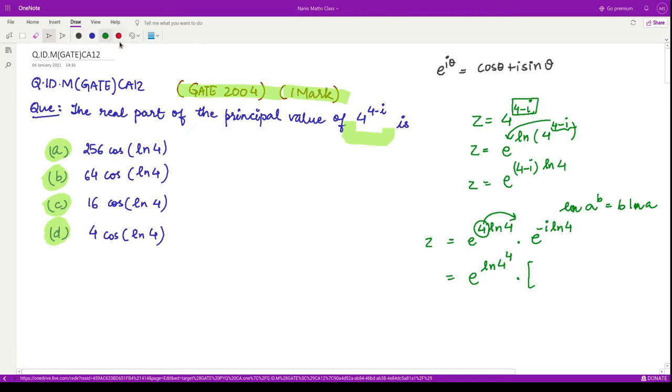So we can write this as cos of ln of 4, and because we have minus here, it becomes minus. So we have cos of log of 4 minus iota sin of log of 4.